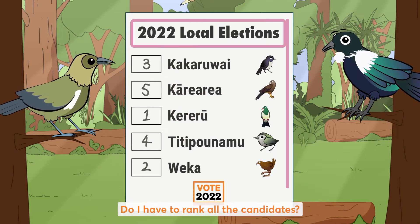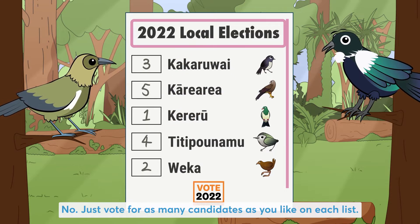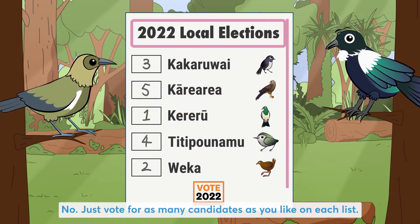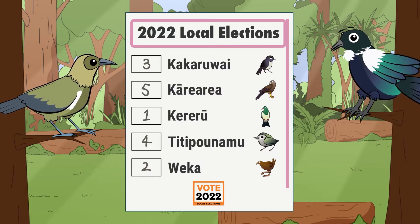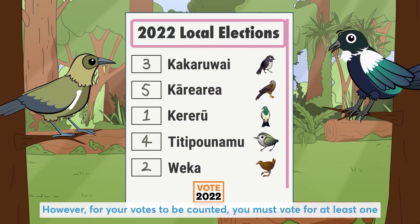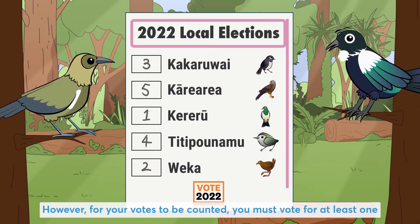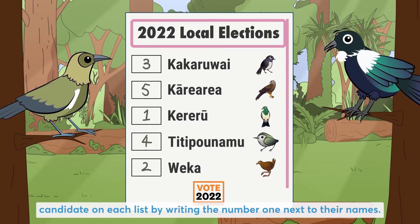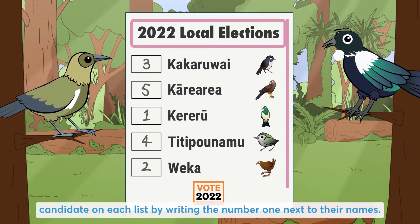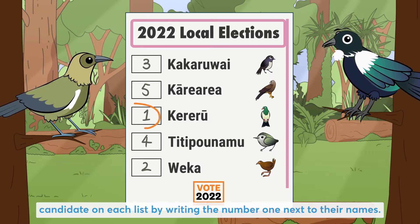Do I have to rank all the candidates? No, just vote for as many candidates as you like on each list. However, for your votes to be counted, you must vote for at least one candidate on each list by writing the number 1 next to their name.